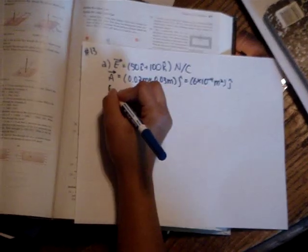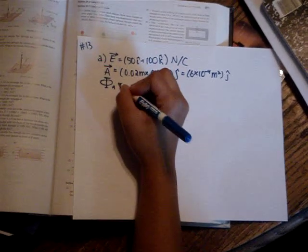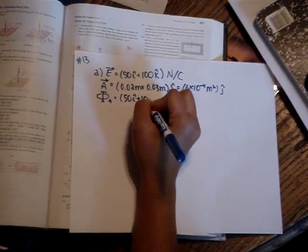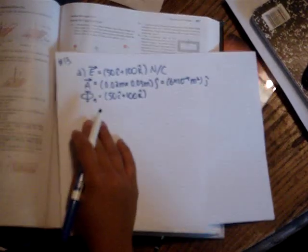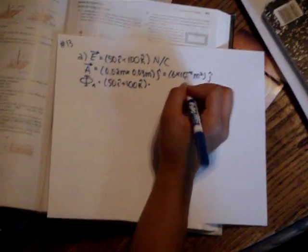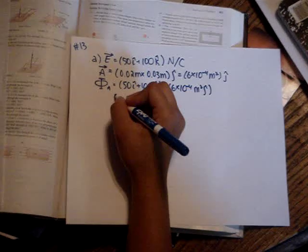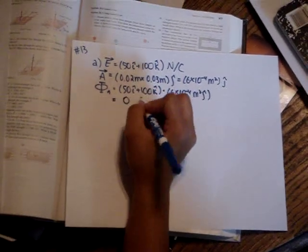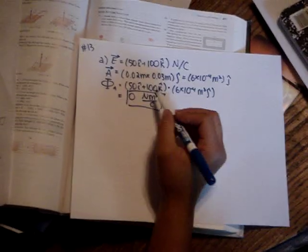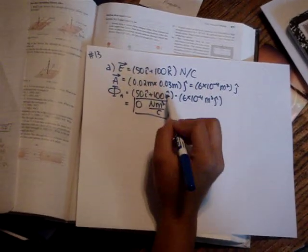And then to find the flux, all you do is take the dot product of the electric field vector times the area vector, which is 6 times 10 to the negative 4 meters squared j hat. And that will give you 0 newton meters squared per coulomb, because none of them are in the same axes. Like this is in the i hat and k hat direction, and this is in the j hat direction.